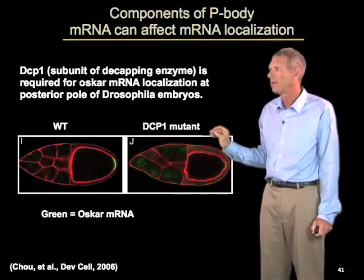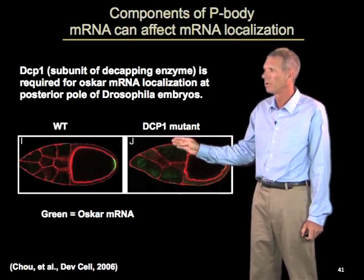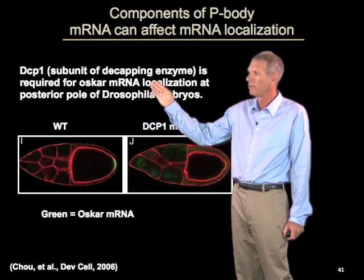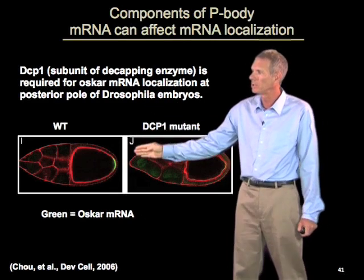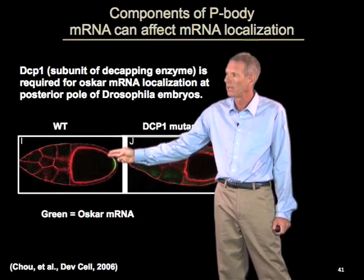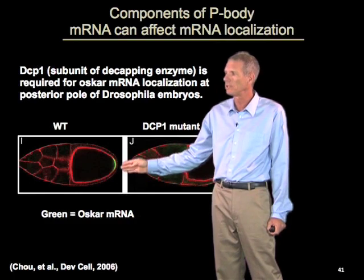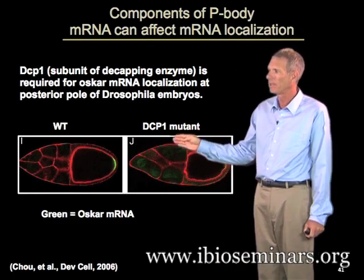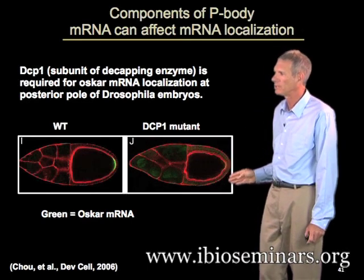I want to highlight that by showing this experiment done in Drosophila embryos, where DCP1, which is a subunit of the decapping enzyme, is actually required for the oscar mRNA to be localized to the posterior pole of Drosophila embryos. This is a Drosophila embryo here. You can see this green here is the oscar mRNA, and it's localized to this region of the cell. Now if we mutate the component of this decapping enzyme, you can see the RNA no longer localizes to the proper region.